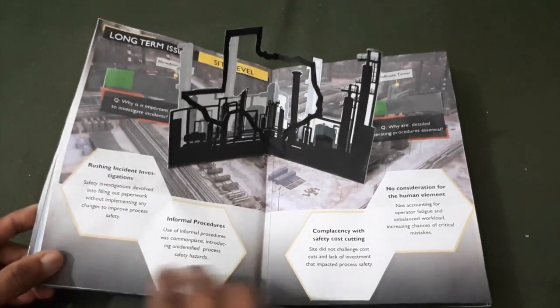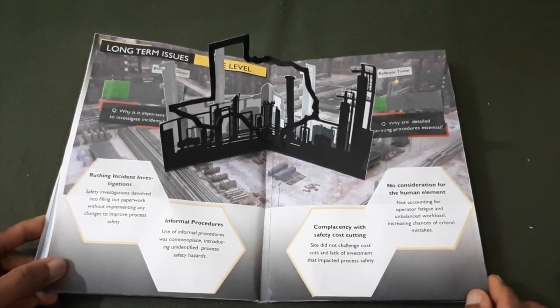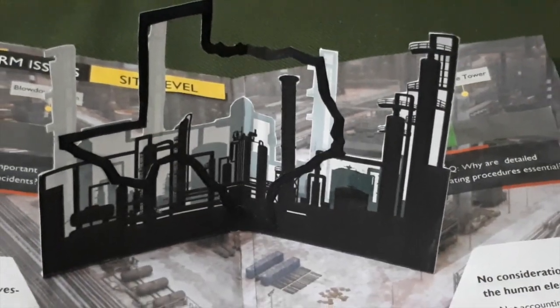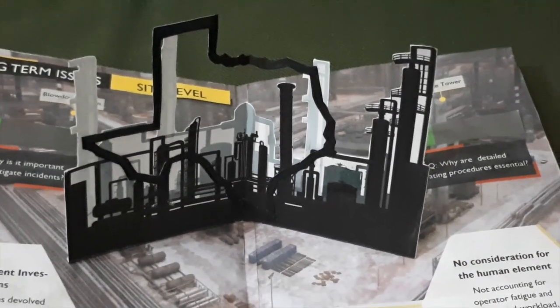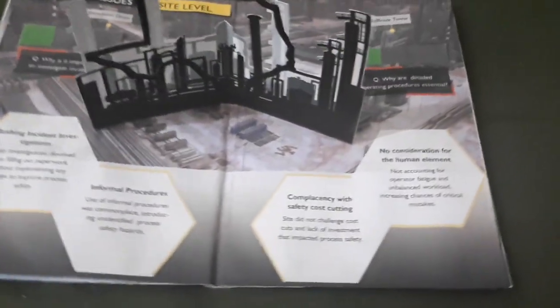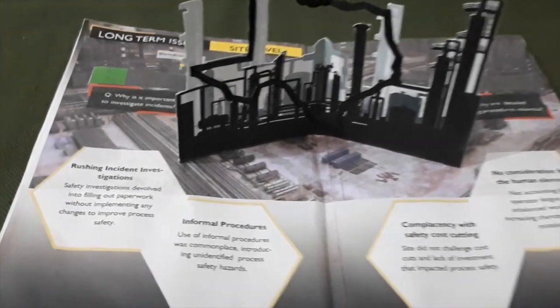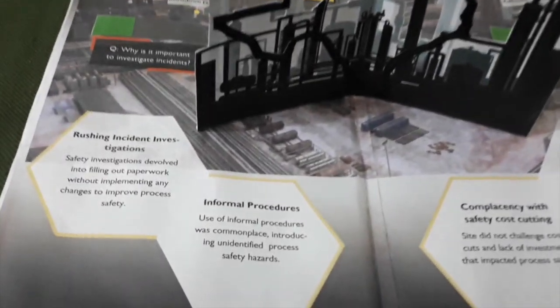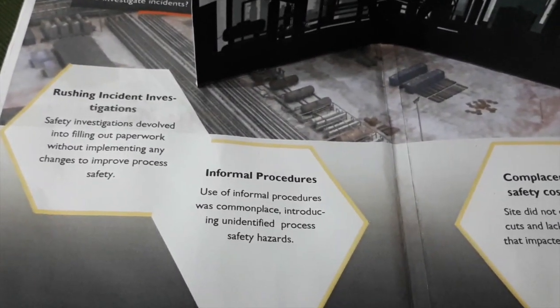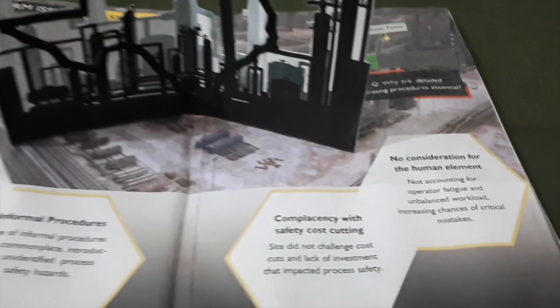The third page shows the long-term failures at the site level. The pop-up is a reference to the site in Texas, and at the center you can see the outline of the state. The hexagonal boxes describe the contributing causes to the disaster that occurred at the site level.